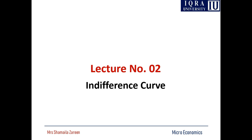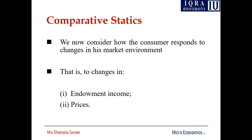The idea behind the budget line was about the maximization of satisfaction by using different goods within the limited income — it was about the budget constraint. Today I am going to start the topic of indifference curve. But before that, in the previous lecture I discussed how to find out the slope and intercept of the budget line, because those were important for the shifting of the budget line.